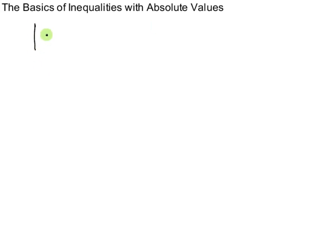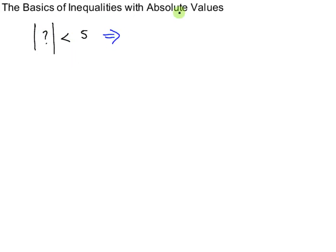I want to begin with this statement: the absolute value of something — that's a question mark — is less than 5. I want to understand this statement, so I'll illustrate on a number line what question mark could possibly be so that this is true.